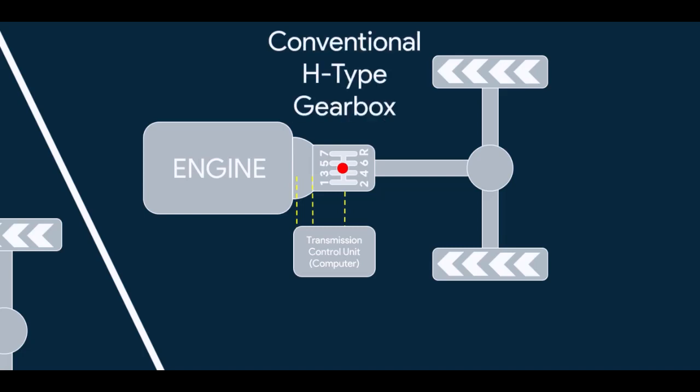In IMT, there is conventional H-type gearbox where the lever is directly connected to the transmission. The driver operates it. Unlike AMT, the driver has absolute control over the shifting of gears. The clutch operation is completely controlled by computer similar to AMT.